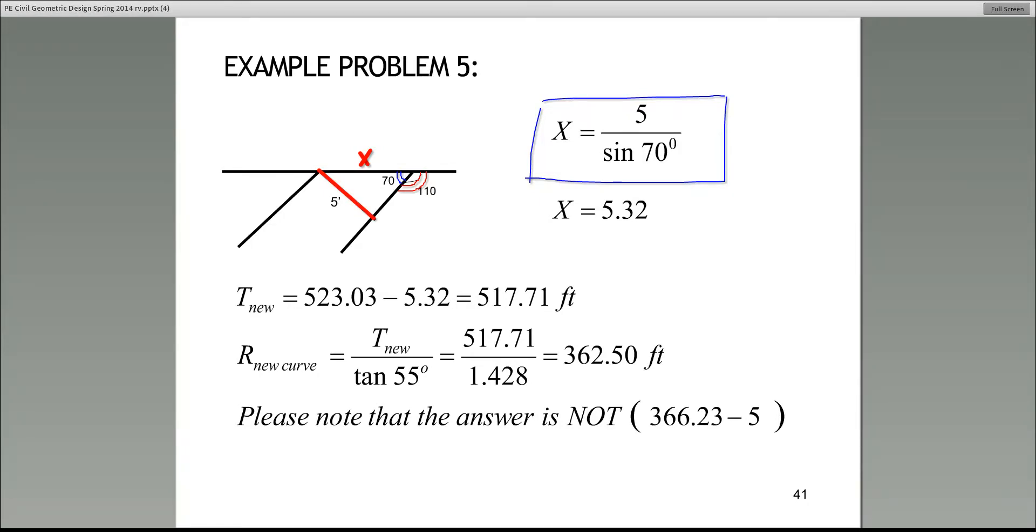Once you calculate that, then the new tangent - is everybody following this solution? This is very, very important, guys. So the new tangent is simply 523.03 minus 5.32, and that gives you the new tangent length after you have made the movement of the forward tangent. So the tangent length is now 517.71.